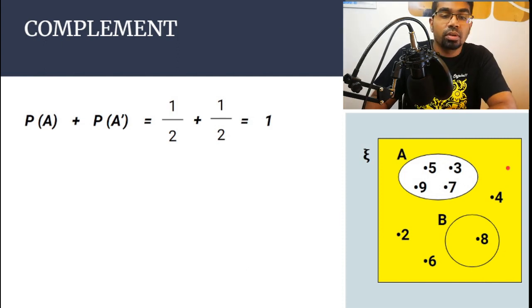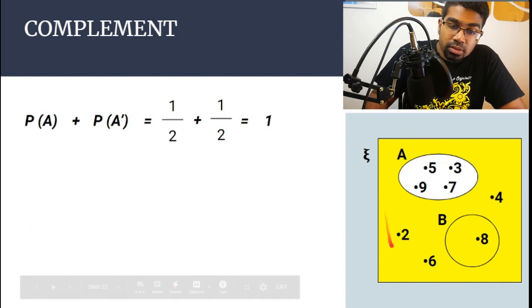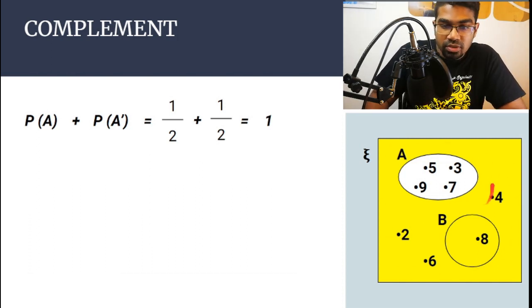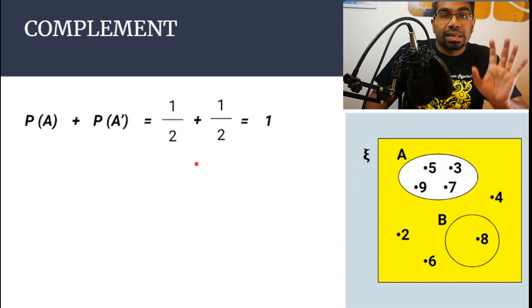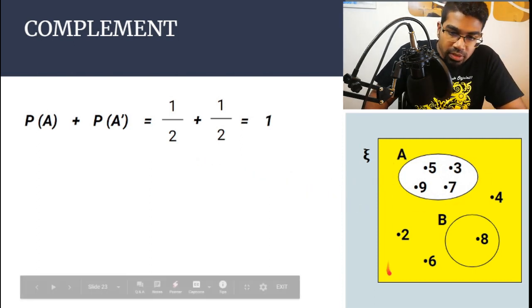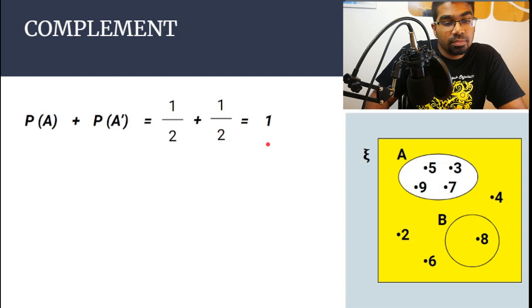When you add the probabilities of all the outcomes in the universal set, they must sum to one. You must make sure there's no overlap — if there's overlap you need to account for it, but that's another video. The key point is: the probability of all outcomes sums to one.